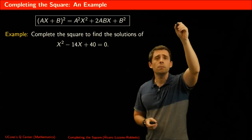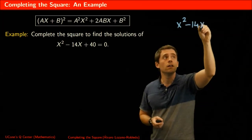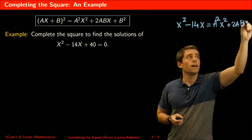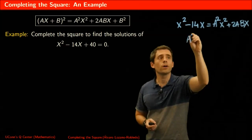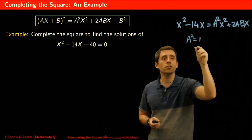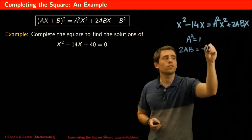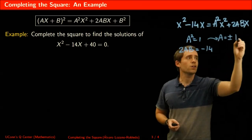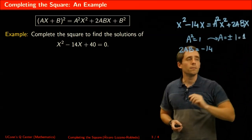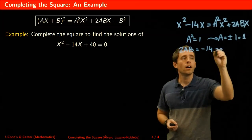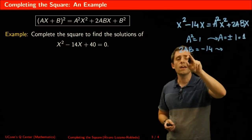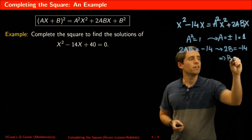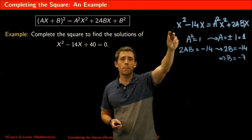I'm going to match x squared minus 14x to the form a squared x squared plus 2abx. That tells me that a squared equals 1, because I look at this coefficient and that coefficient. It also tells me that 2ab is minus 14. This means a is plus or minus 1, and I'll pick a equals 1. Then from 2ab equals minus 14 with a equals 1, I get that b is minus 7. So I've found my a and b.